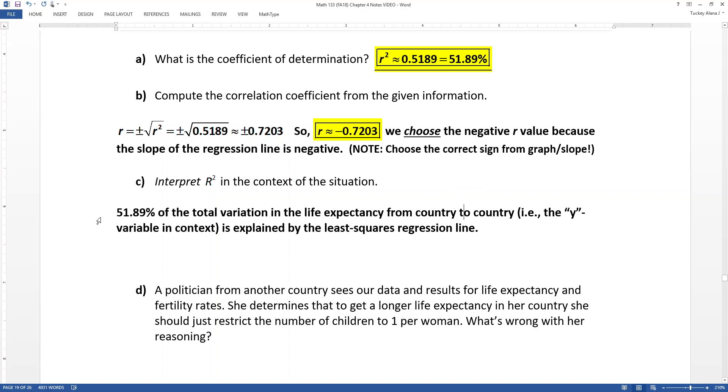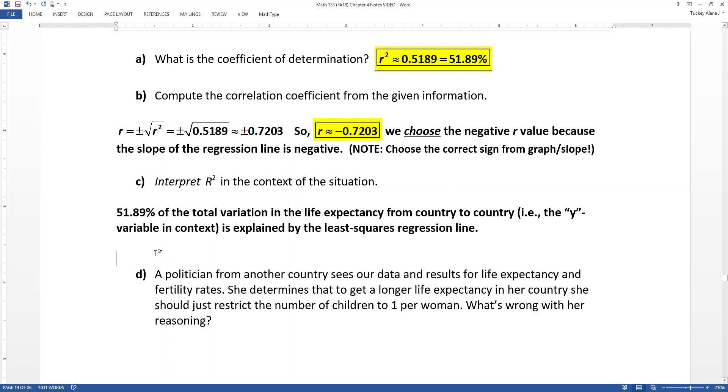So we can use the line to explain about 52% of the variability from country to country. Why do some countries have people living longer than others? Well, 52% of that variability I can explain within a line through or utilizing the fertility rate. But that means that 42% of it or so, I'm not really sure why it's happening. It's because of other variables.